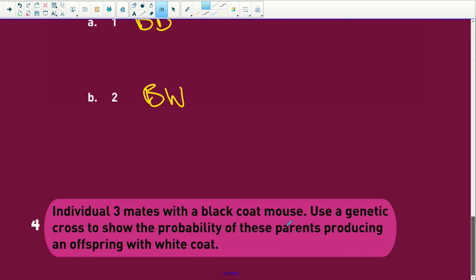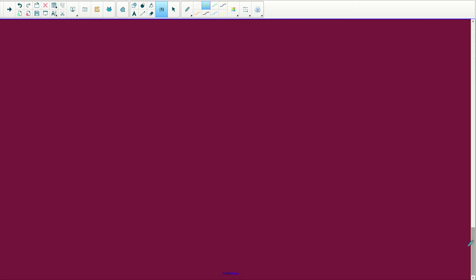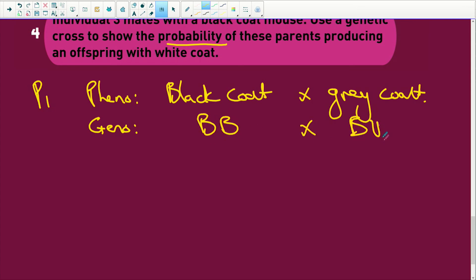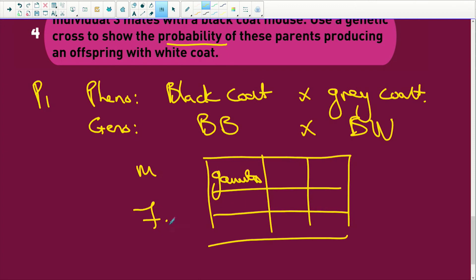Individual three mates with a black coat mouse. Use a genetic cross to show the probability that these parents will produce a baby with a white coat. Okay. I need two minutes for this quickly. Let's see here. Okay. We're going to go. I'm doing this very fast. P1. We have the phenotype of the parents. We're going to have black coat times grey coat. Okay. So the genotype, what are we going to have? We're going to have capital B times capital B, capital W. We have meiosis. We have our little Punnett square. We have gametes. We have fertilization. Okay.